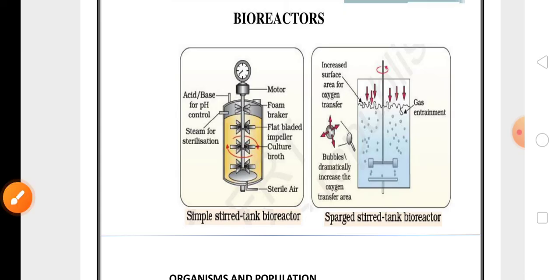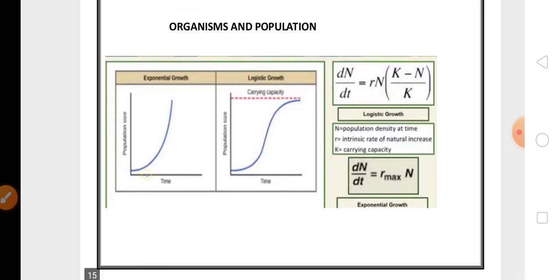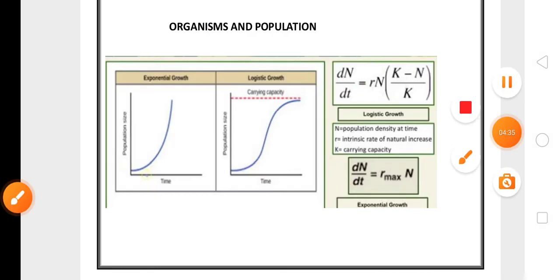Then from organisms and population there are two graphs, exponential growth curve and logistic growth curve, along with the formulas also important. So these are some of the important diagrams from this chapter. Thank you.